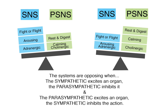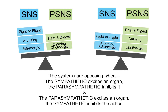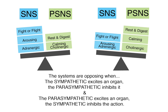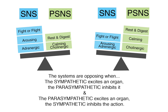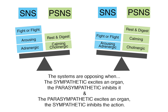When the sympathetic system excites an organ, the parasympathetic system inhibits it, and when the parasympathetic system excites an organ, the sympathetic system inhibits the action. Our focus in this lesson is on how cholinergic and anticholinergic agents affect the parasympathetic nervous system.